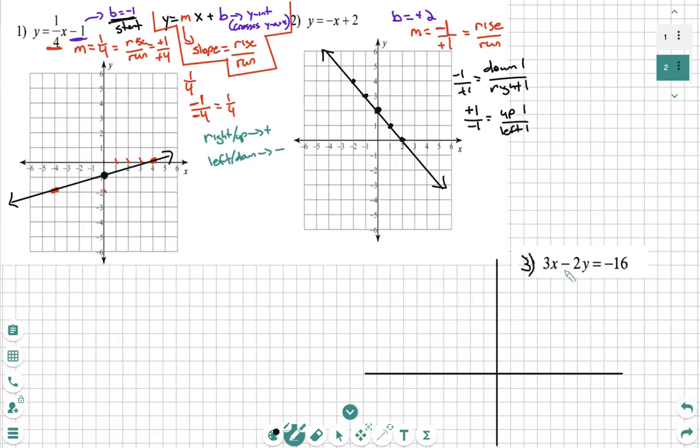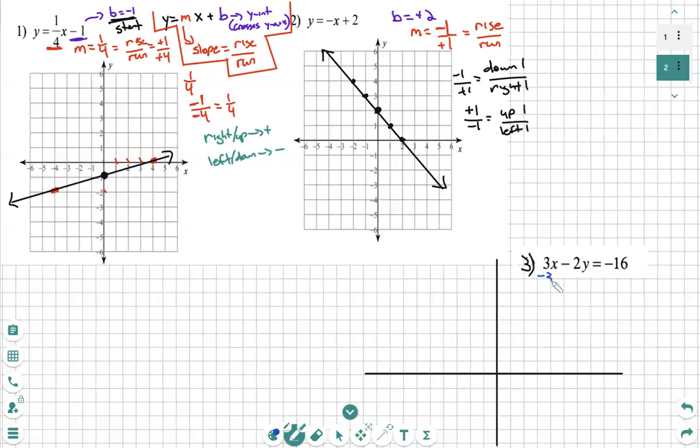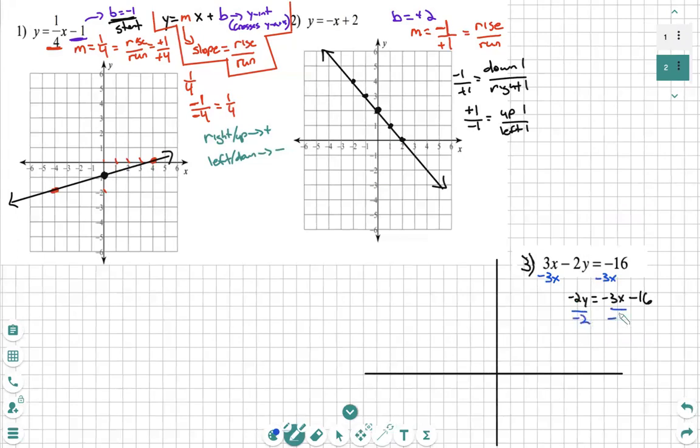I need to manipulate it or solve it so it is y equals mx plus b. The first thing I'm going to do is subtract my three x. What I do to one side, I must do to the other. Rewrite the equation. Rewrite the equation. And then lastly is my y by itself. Not just yet. I will divide every term by negative two. Let's clean up one last time.